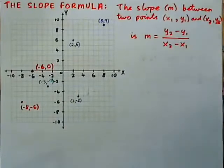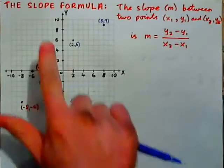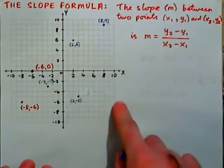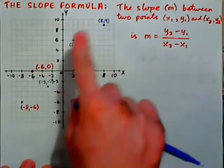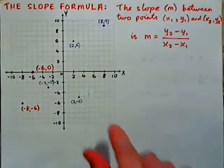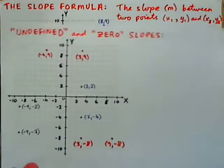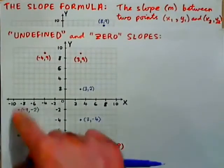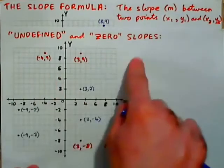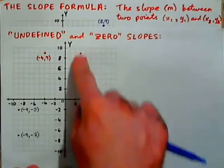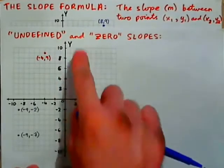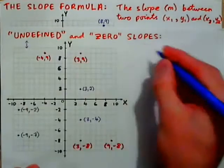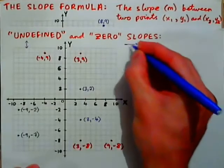In this video we're going to look at what's called the slope formula — the slope between two points on an XY coordinate plane — and we'll also explore undefined and zero slopes. Undefined slope is for a vertical line, and zero slope is for a horizontal line.